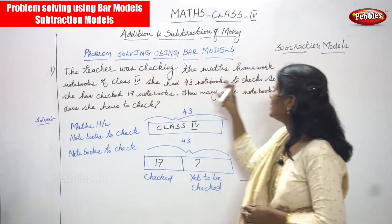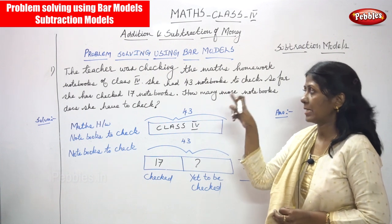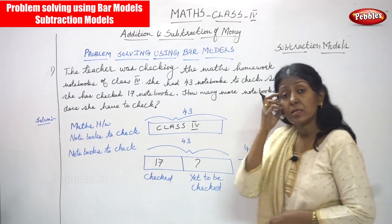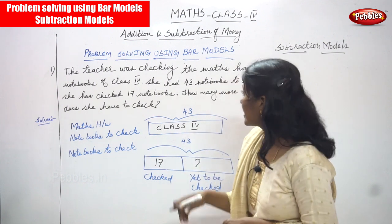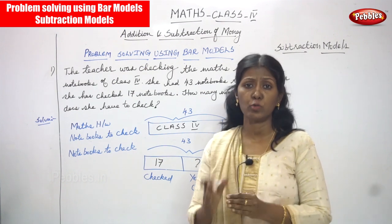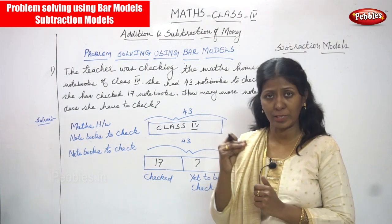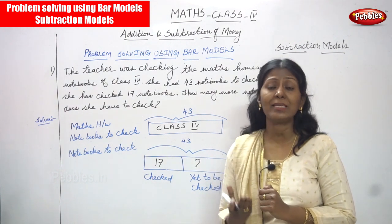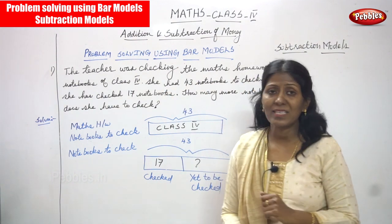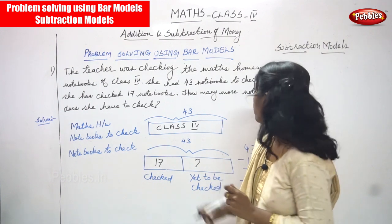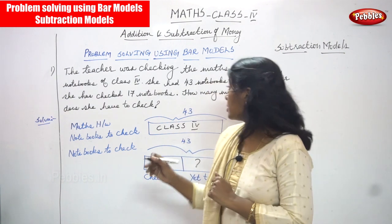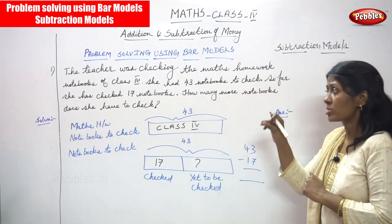The first question: the teacher was checking the math homework notebooks of class 4. She had 43 notebooks to check — meaning there are 43 students in the class. So far, she has already checked 17 notebooks. How many more notebooks does she have to check?